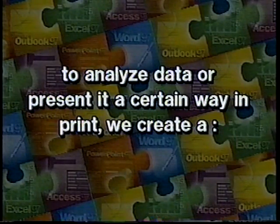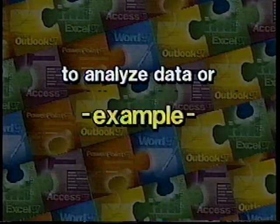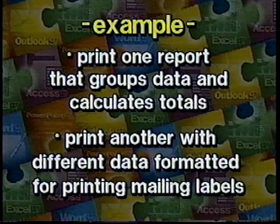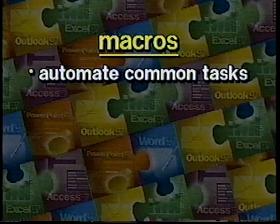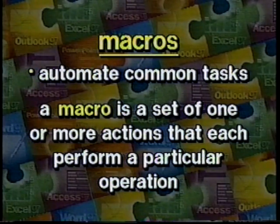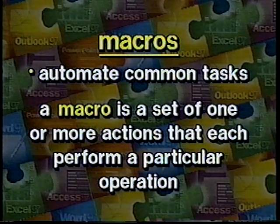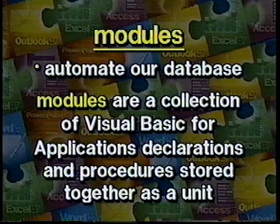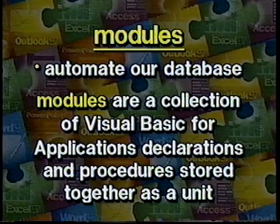To analyze our data or present it in a certain way in print, we create a report. For example, we might print one report that groups data and calculates totals, and another report with different data formatted for printing mailing labels. We use macros to automate common tasks. A macro is a set of one or more actions that each perform a particular operation, such as opening a form or printing a report. We can also use modules to automate our database. A module is a collection of Visual Basic for Applications declarations and procedures that are stored together as a unit.